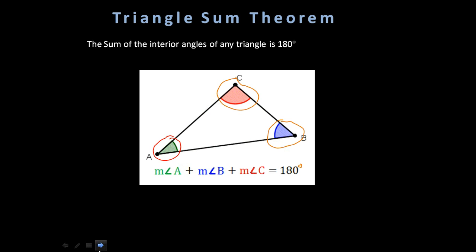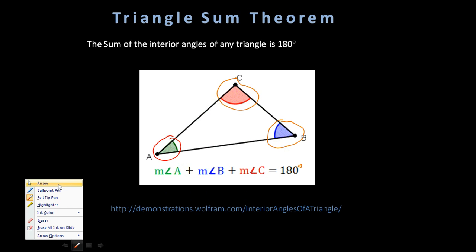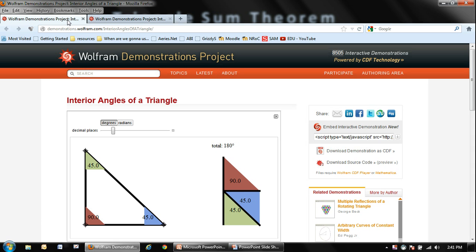So I have a demonstration on Wolfram all pulled up. Let's take a look at that. Okay, so this demonstration shows a triangle and it shows three angles. This green angle here measures 45 degrees, this one measures 45 degrees, and this one here measures 90 degrees.